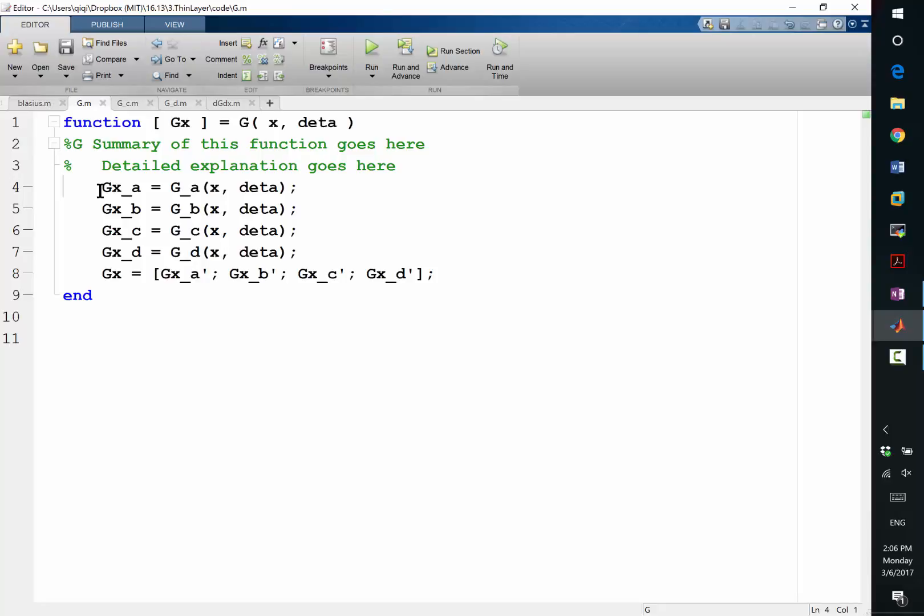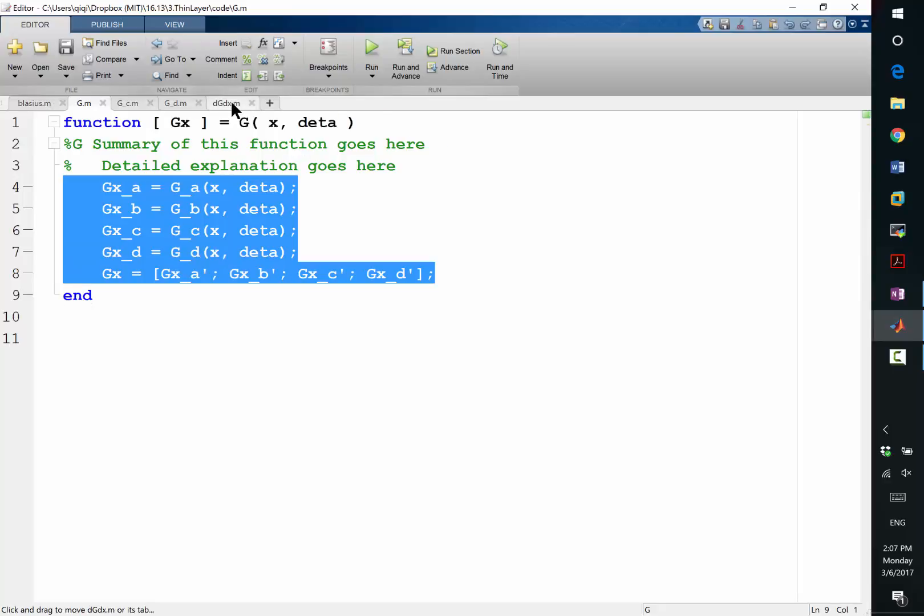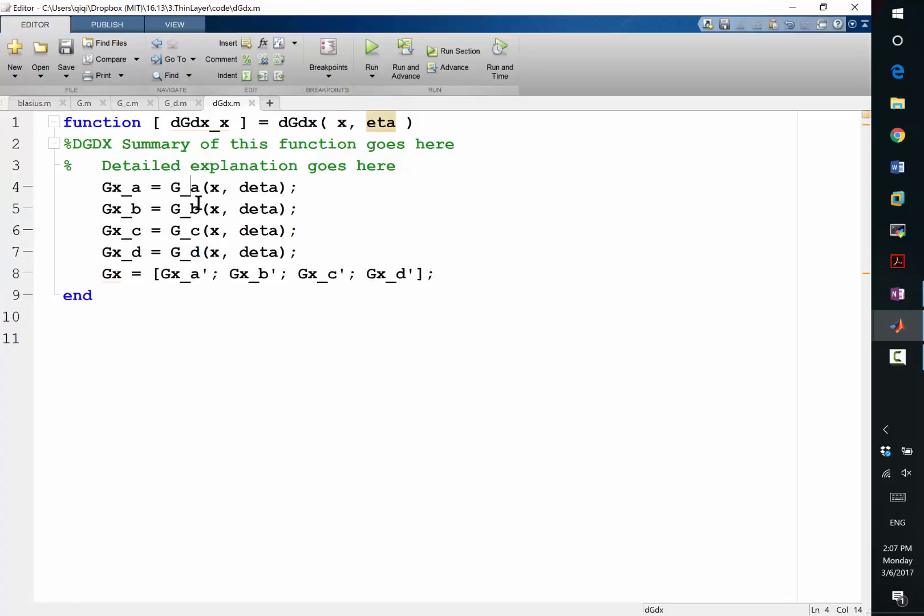So g computes these four vectors. And now we want to compute the derivative of the entire g. It should just be the derivative of these four vectors stacked together, right? So let's actually do that. So instead of coding up additional functions to compute these vectors, let's just have g_a, g_b, g_c, g_d actually compute also the Jacobians. How about that? Actually, because that'll create a twice computation, let's just code up individual functions to compute the Jacobians.